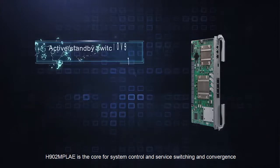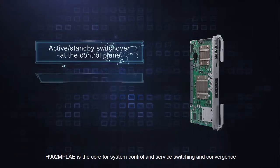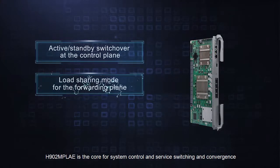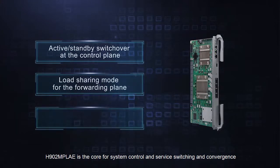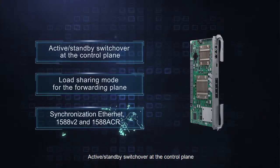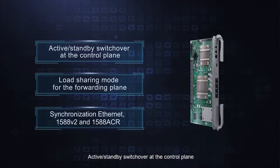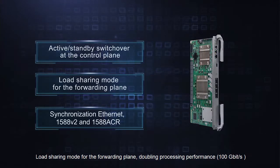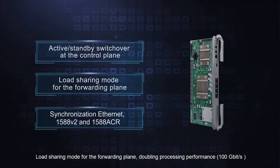H902 MPLAE is the core for system control and service switching and convergence. It supports active and standby switchover at the control plane, and load sharing mode for the forwarding plane, doubling process performance to 100 gigabits per second.